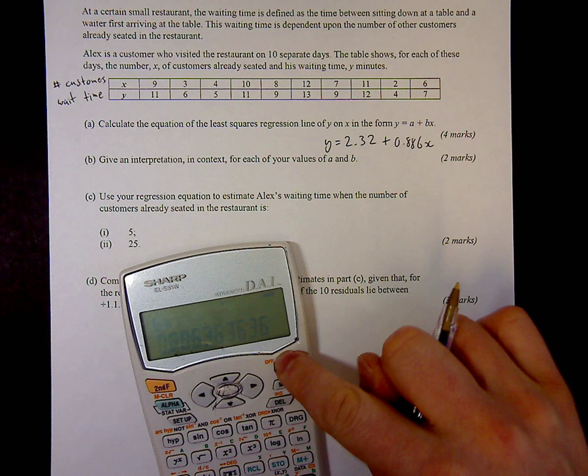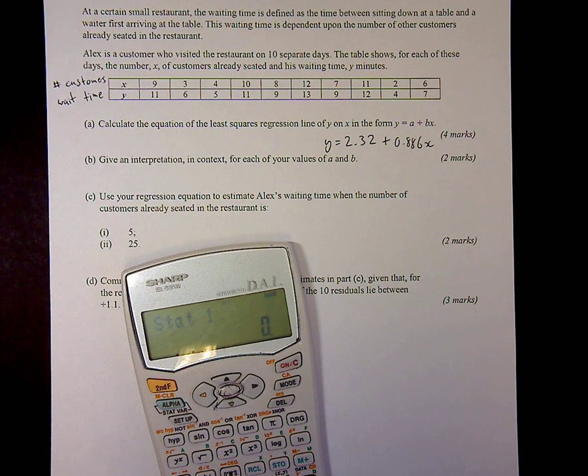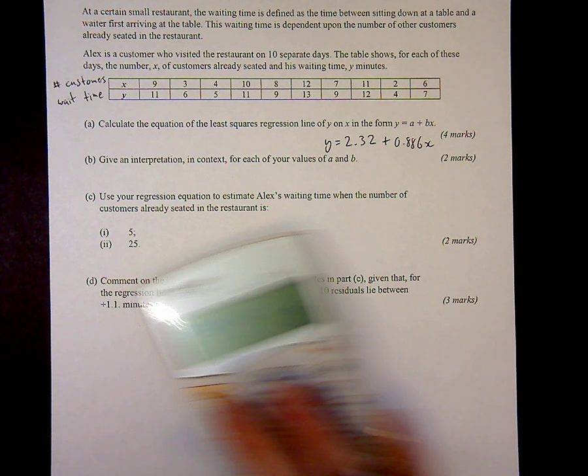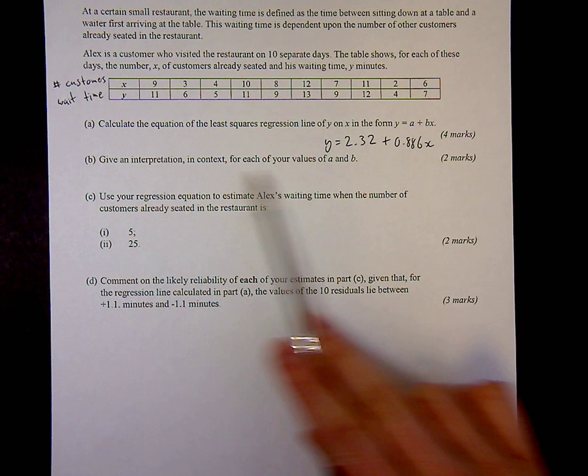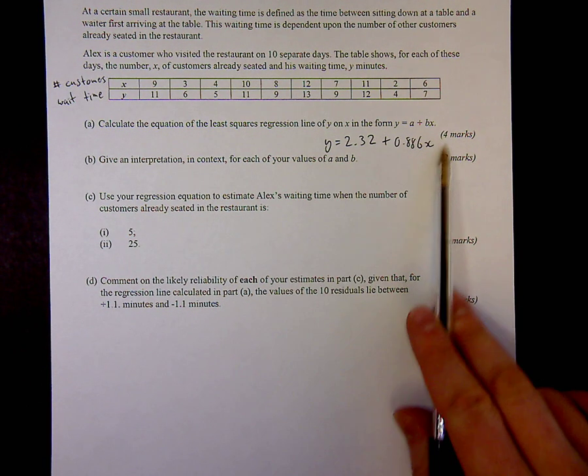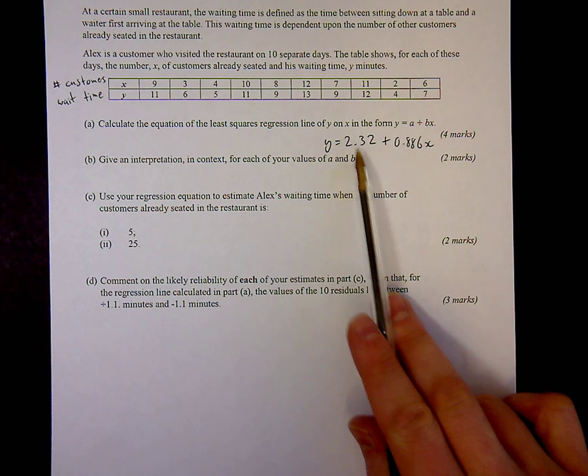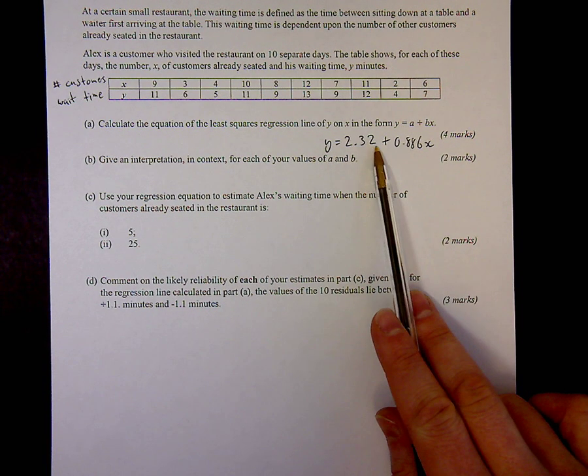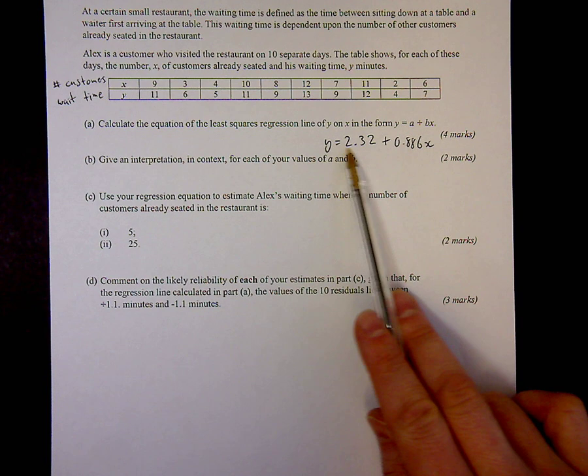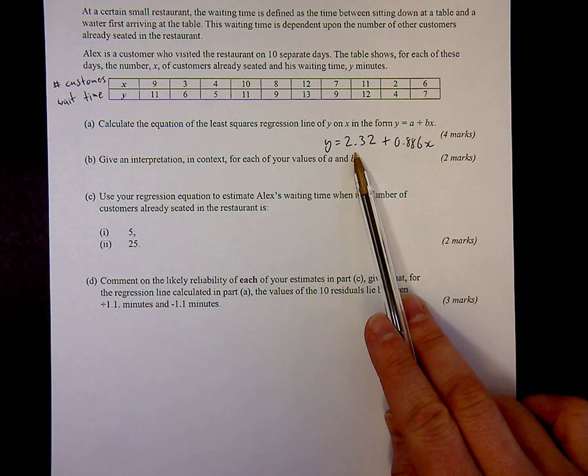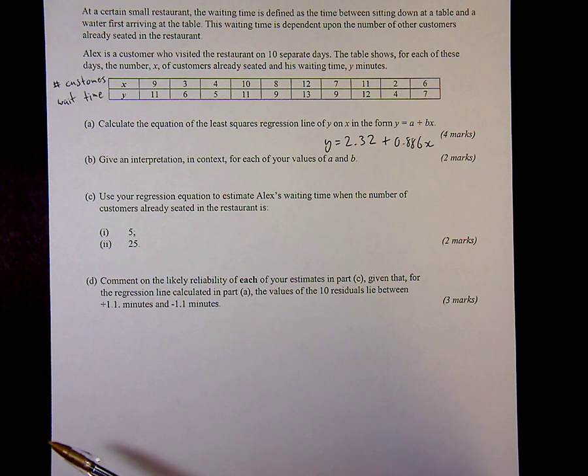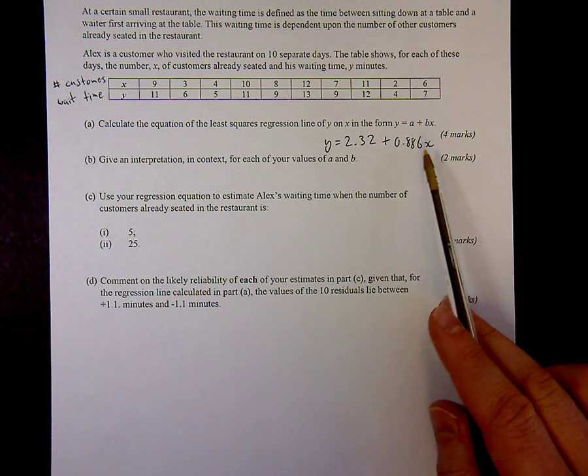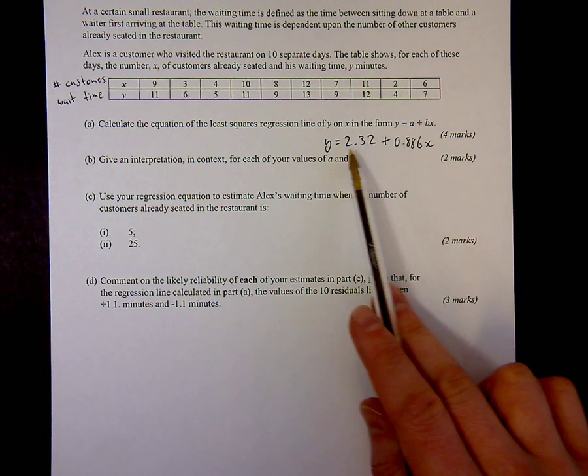A little bit tricky is the interpretation of it in context. If you think about it in terms of what they actually mean, it's in the form of a straight line here, so I've got an intercept, a y intercept, and I've also got a gradient. Well, the y intercept occurs when x is 0. Back up here, we'll see that x is the number of customers, so when the number of customers is 0, my y value, the wait time, will be 2.32.